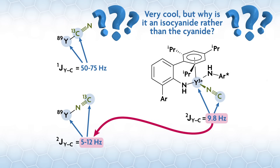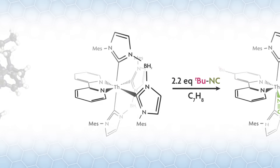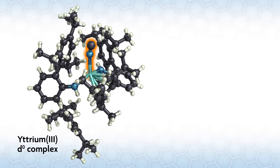Very cool, but why is it an isocyanide rather than a cyanide? There are a few other isocyanide complexes known for the main group, like magnesium, and for the F-block, like thorium. For example, here is one from John Arnold's group at Berkeley, where they also cleave the C-C bond in tert-butyl isonitrile, in this case to make a thorium isocyanide. Basically, the first criterion to get an isocyanide is there can't be significant pi backbonding. We have an yttrium-3 D0 complex, so no backbonding here.